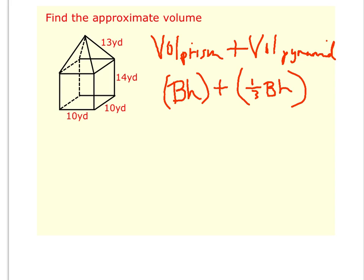Starting with our prism, hopefully it's pretty obvious that this is a square prism because you see that we have ten by ten. And so the area of that square is ten times ten. And the height of the prism is also given to us, which is fourteen. So no problem there.